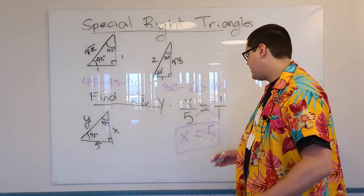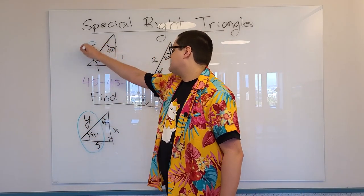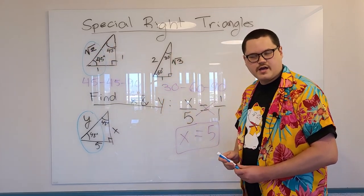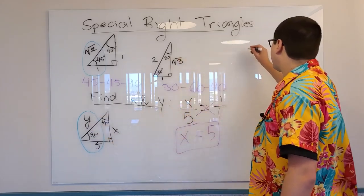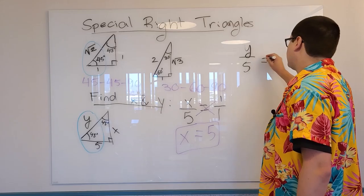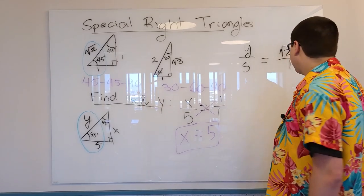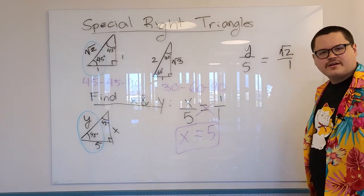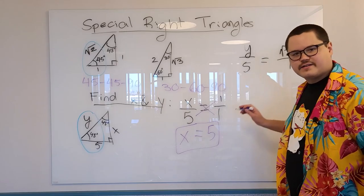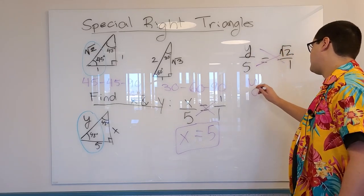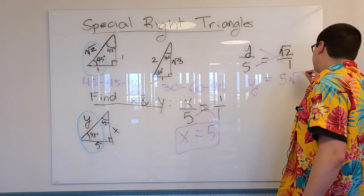But did you know about y? How do we find y? Same thing. Corresponding sides are in proportion. So this to this is this to this. Let's set it up. This to this, so y to 5, equals this to this. Square root of 2 to 1. Got it? Well, what do we do now? Same thing we did right over here. Cross multiply. That's correct. y times 1, that's y. 5 times square root of 2, that's just 5 root 2. Nothing more you can do.